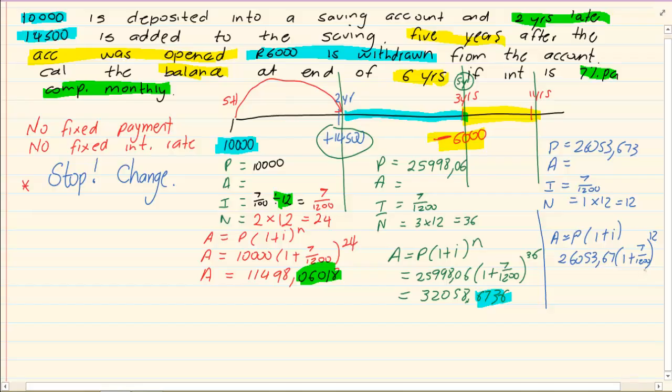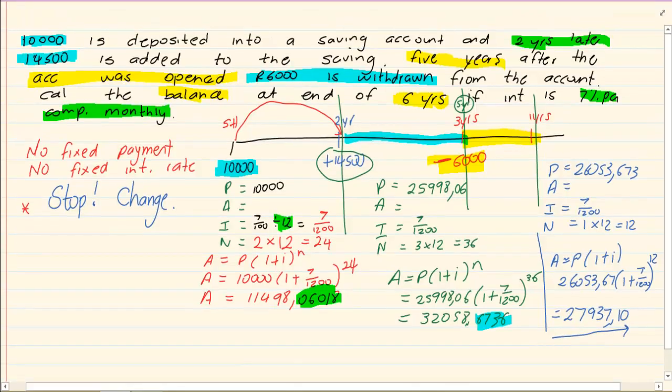You are going to get used to using your answer button. So you are going to press answer which will immediately have this 26,000, open brackets 1 plus 7 over 1,200 to the power of 12. Now since this is our final answer we can round off. Which will give us 27,937 Rand 10 cents.